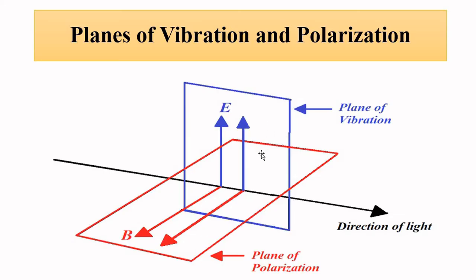When we restrict the electric field vectors to a particular direction or plane, we get two such planes: the plane of vibration and the plane of polarization. Both these planes are perpendicular with respect to each other, which is natural because the electric and magnetic field vectors are in mutually perpendicular directions.